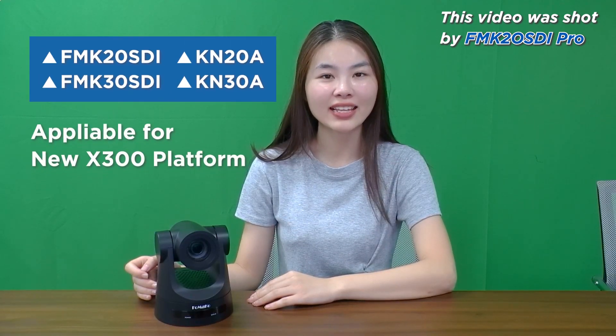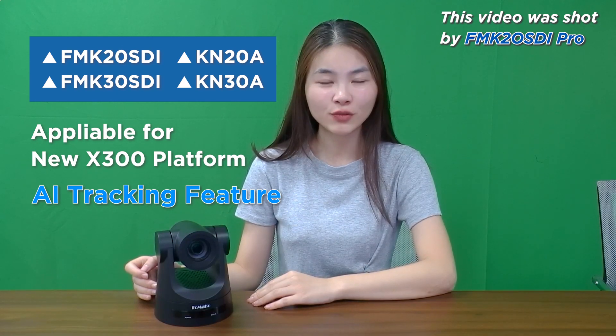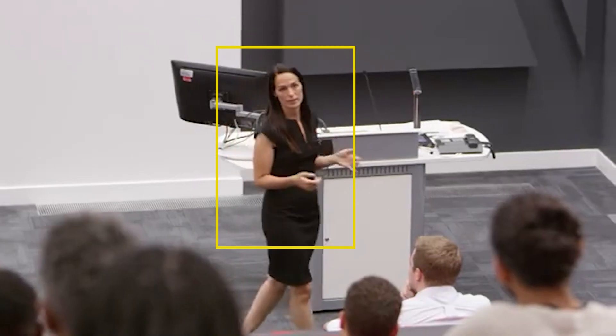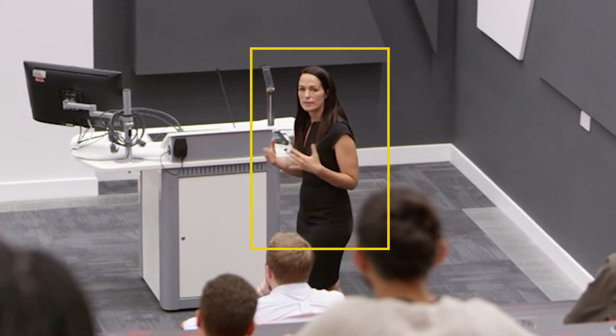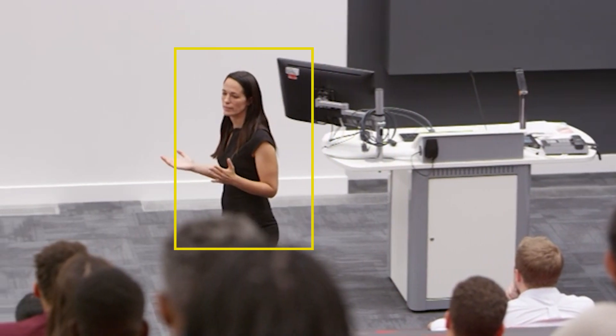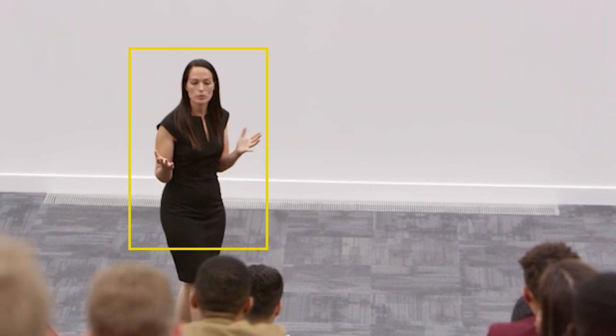Hello everyone, we are excited to announce a major update for our Formaco 20SDI, 30SDI, KN20A, and KN30A PDC cameras: the AI tracking feature. This feature uses monocular tracking, meaning it tracks objects in 2D space with just one camera. It detects and follows objects, estimating movement and orientation without the need for multiple cameras. Let's dive into how this tracking works and go through a step-by-step guide on how to use it.